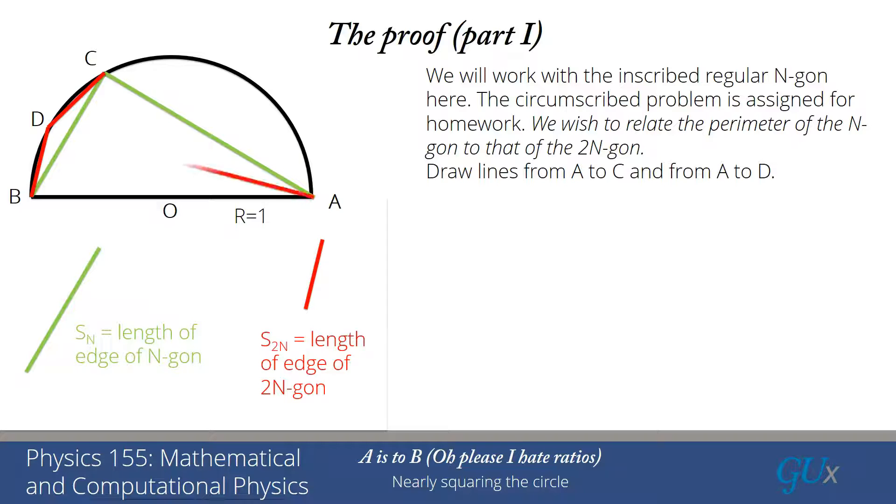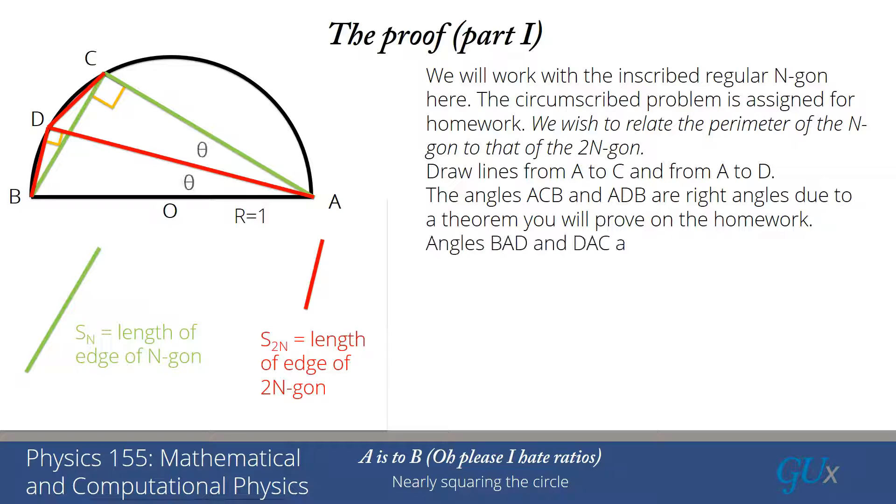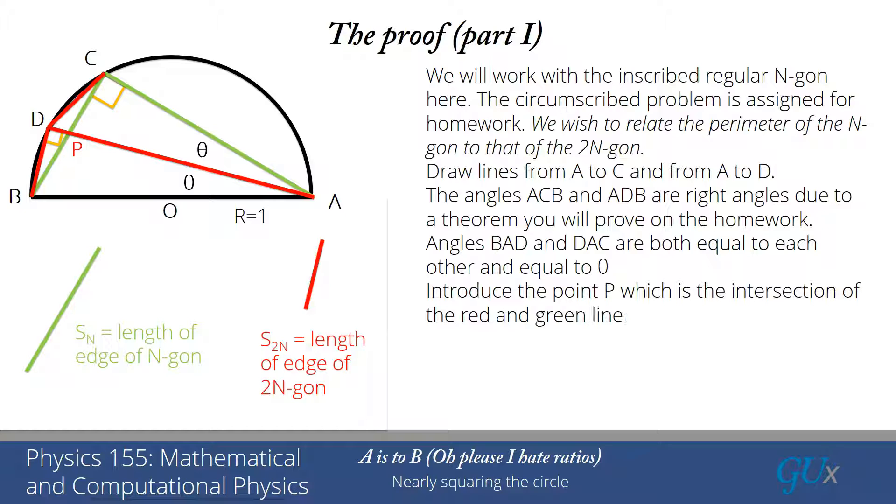So our first step is to draw lines from A to C and from A to D. D is a point that lies on the bisector of the angle BAC, and that occurs because the lengths and the angles of the 2n-gon are set up in such a way that point D will lie on that bisector. The angles ACB and ADB are both right angles due to a theorem that you're also going to prove on the homework. We've mentioned this theorem once before.